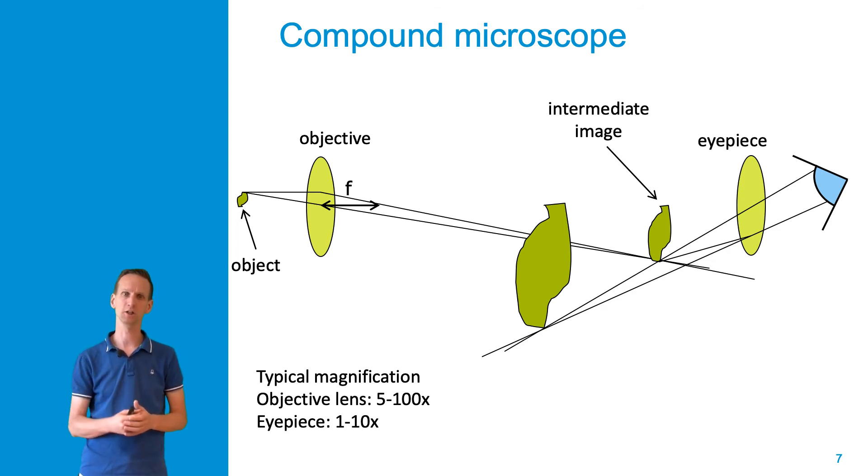This brings in the additional magnification. Typical magnifications that we have in current day compound microscope systems are a factor of 5 to 100 times for the objective lens, depending on which type of objective lens we use, and an additional factor of about 1 to 10 times magnification brought in by the eyepiece.